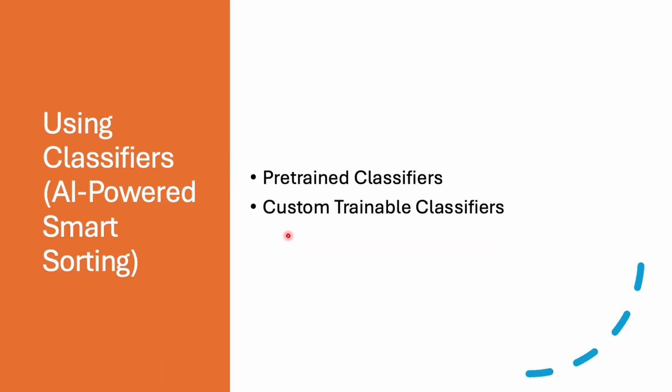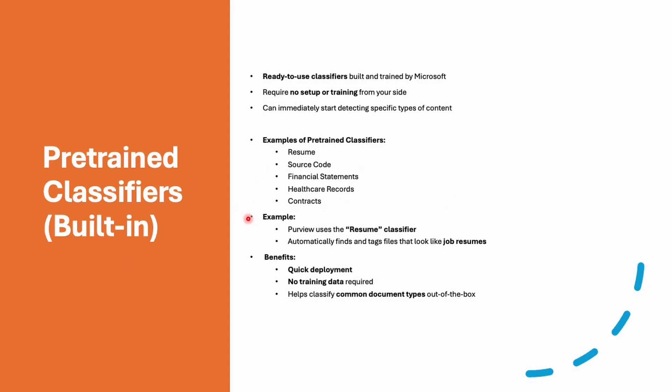The third method is the smartest way to classify data. The classifier learns how to recognize content, and we train it by giving examples. There are two ways to do this: pre-trained classifiers and custom trainable classifiers. A pre-trained classifier is one already created and trained by Microsoft — we can just start using it right away. For example, there's a built-in classifier for resumes that will automatically find and tag files that look like job resumes.